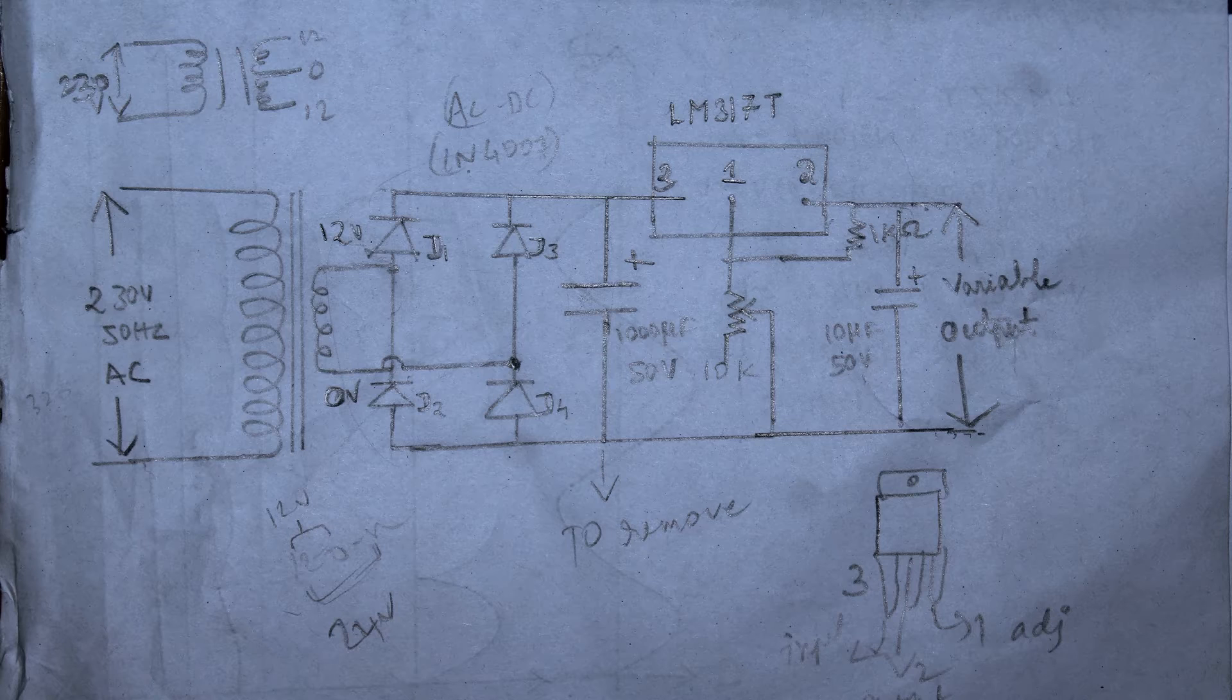When we are using this 12 and 0 terminal we will be getting 12 volt output, which is stepped down from 230 volt mains. These four diodes are used for rectification purposes, which will be converting AC to DC, which is nothing but the normal 1N4007 diode.